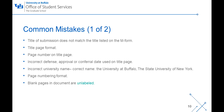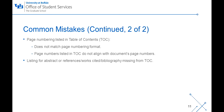Here are some common formatting mistakes seen when reviewing ETDs. The title of the ETD does not match the title listed on the M-Form. If your title has changed since the M-Form was signed, please have your advisor send us an email with the correct title. The format of the title page does not match the template or there is a page number on the title page. The date used is not the defense date, final approval date, or conferral date. The university name is written incorrectly. The page numbering format is incorrect, blank pages may be unlabeled, page numbers in the table of contents do not align with the document's page numbers, or the abstract or references section may be missing from the table of contents.